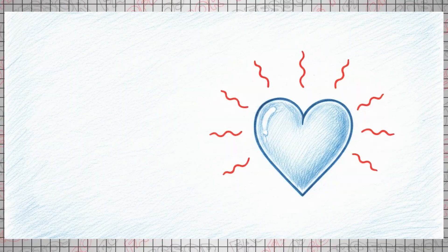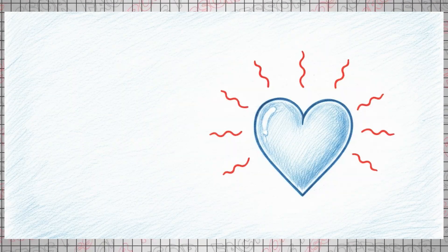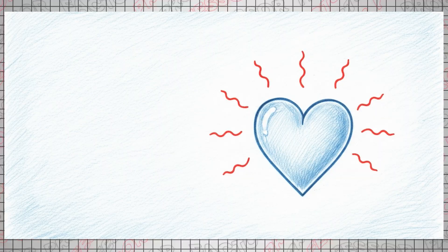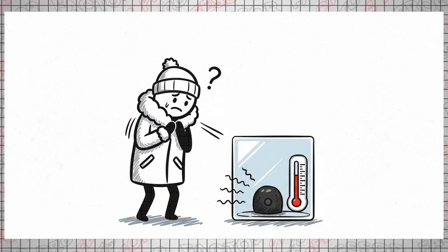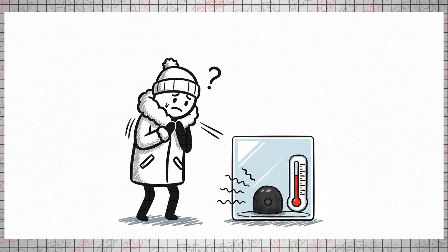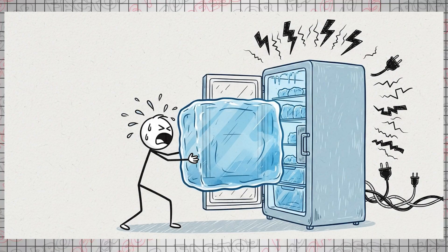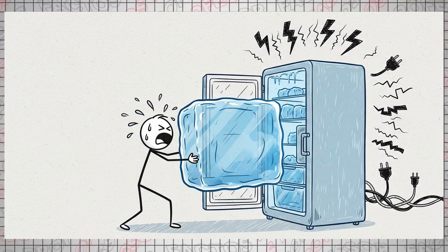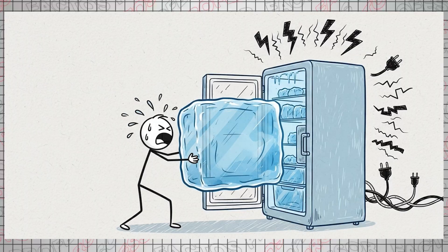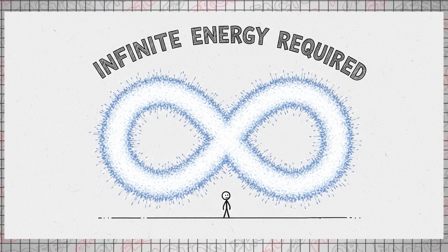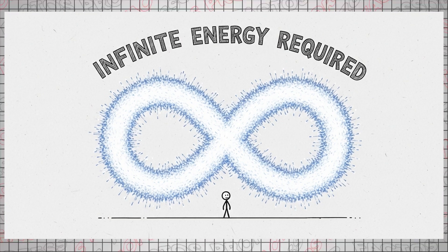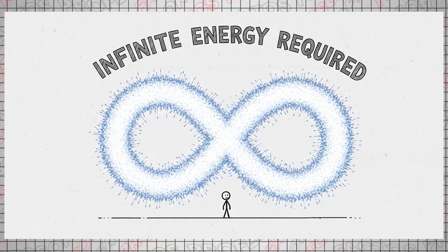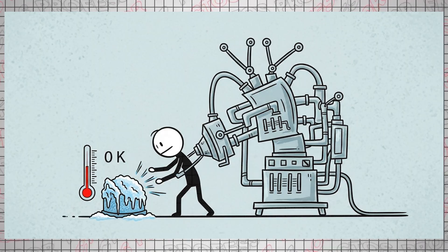Energy is never created or destroyed, it merely transforms from one place to another, from one form to another. When an object is cooled, say, an isolated heart on a freezing winter day, it releases heat into its surroundings. The problem is, the closer an object gets to absolute zero, the less heat it radiates. This means that at lower temperatures, further cooling becomes increasingly inefficient and energy-intensive.